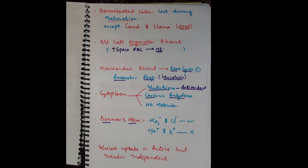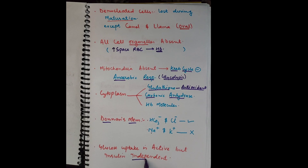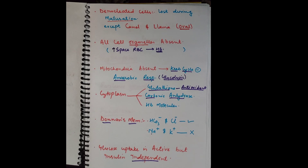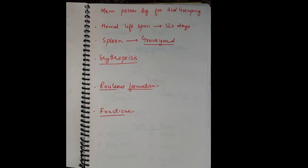RBCs take up glucose from the blood by active transport, but this transport is independent of insulin. Most cells of the body depend on insulin for glucose uptake, but RBCs do not require insulin to take up glucose.